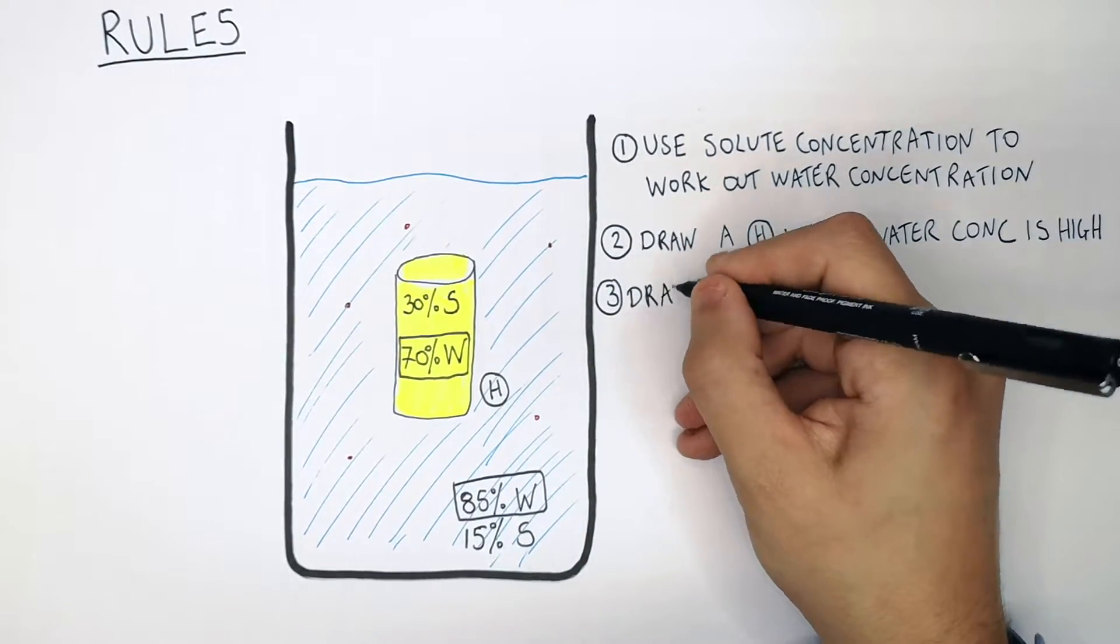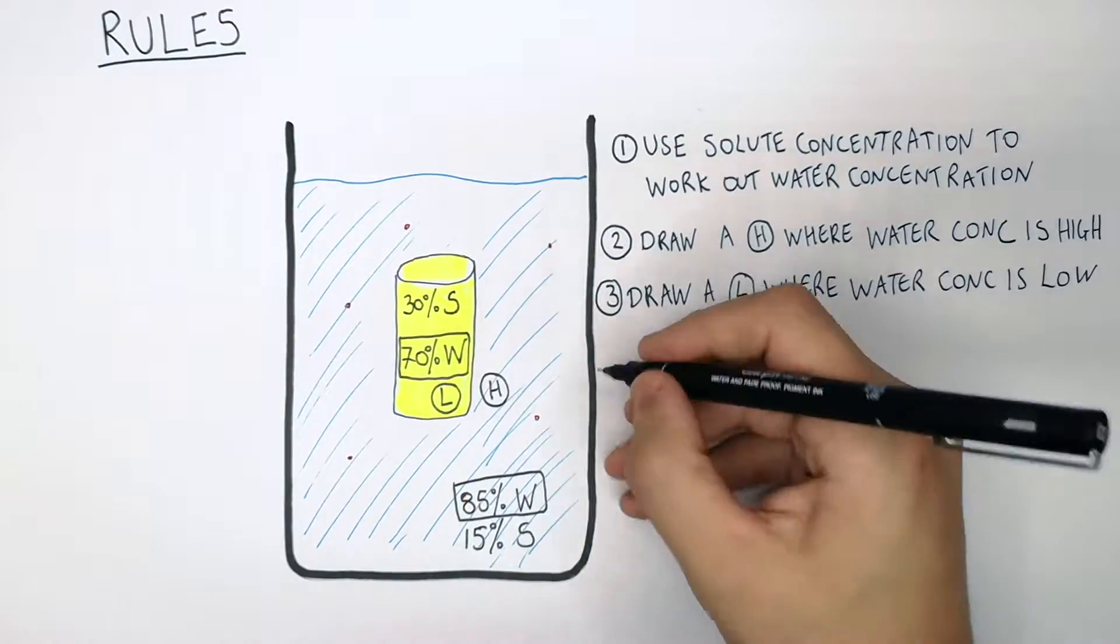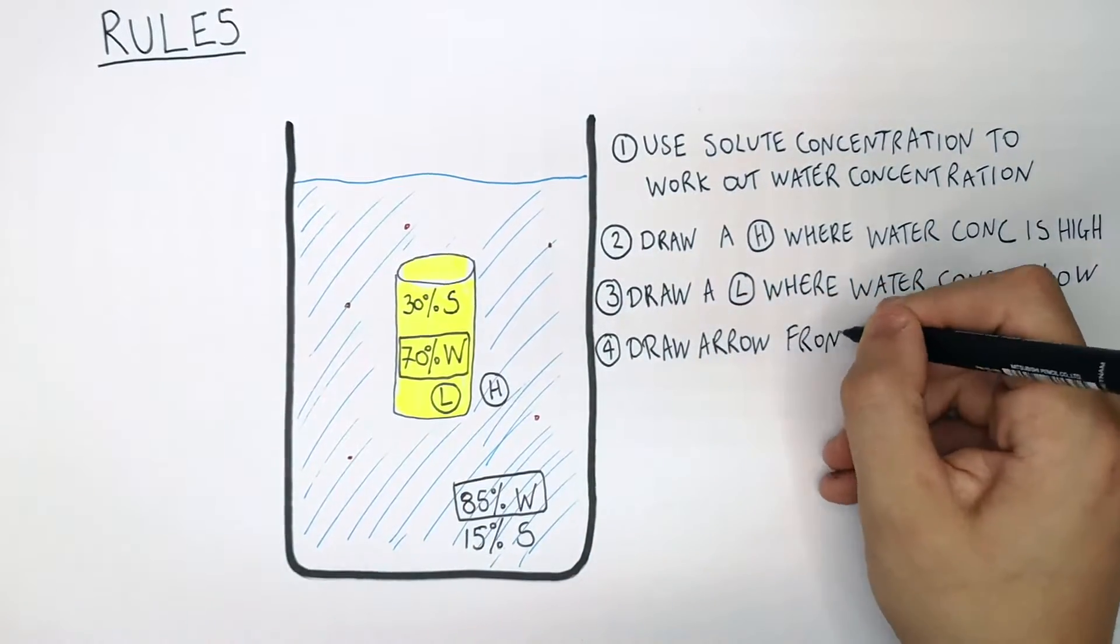Number three, so we draw a L where the water concentration is lower. So that's in there. Number four, you draw an arrow from the H to the L.